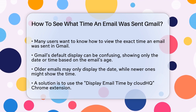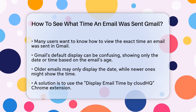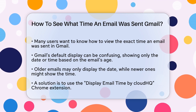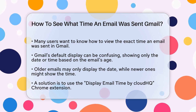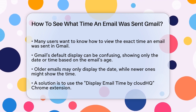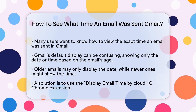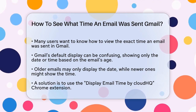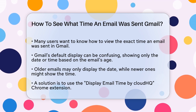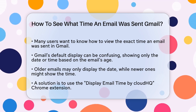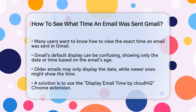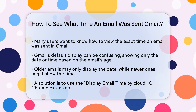Gmail typically displays the date and time of an email in the last column of your inbox, but this format can change based on the email's age. For instance, older emails might only show the date, while newer ones might show just the time. This can be confusing and might lead to oversights.